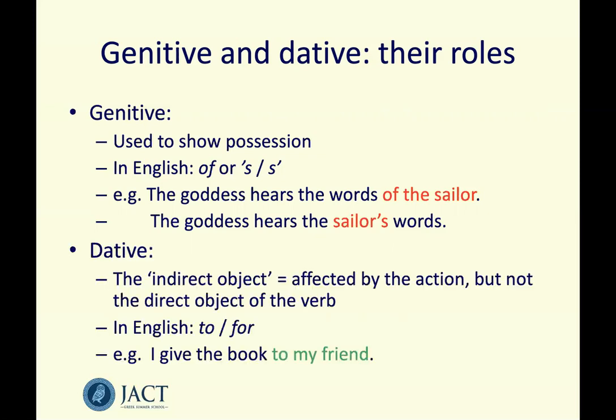The dative is what we call the indirect object. It's quite hard to define — I would say it's a noun which is affected by the action going on in the sentence but is not the direct object of the verb. In English we usually use the words 'to' or 'for' to translate the dative. For example: 'I give the book to my friend.' Here, 'I' am the nominative subject, the book is the direct object accusative, and the friend is affected but is not the direct object. So with the dative, have in your head the words 'to' or 'for' as your starting point.